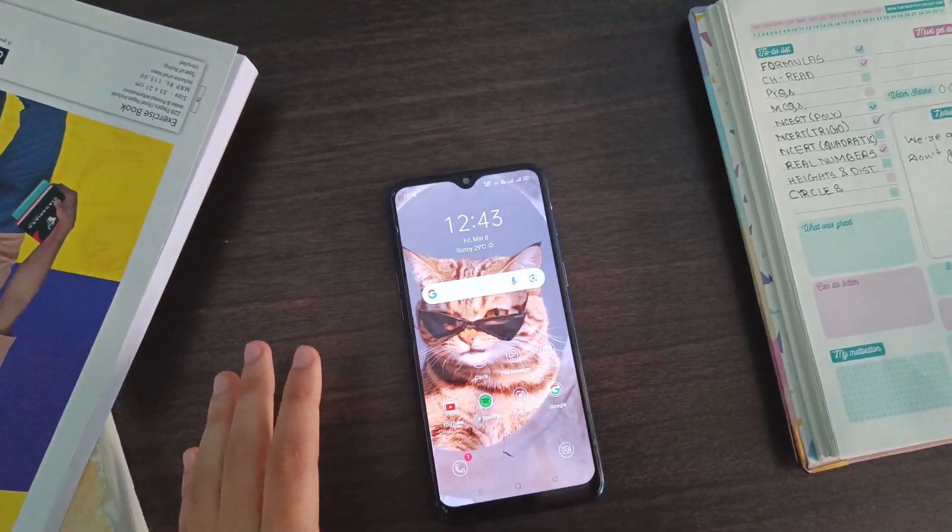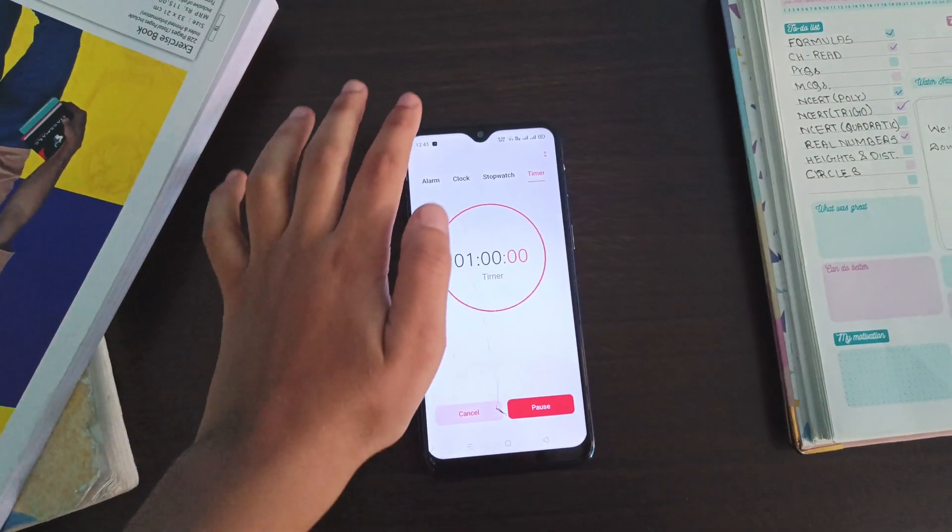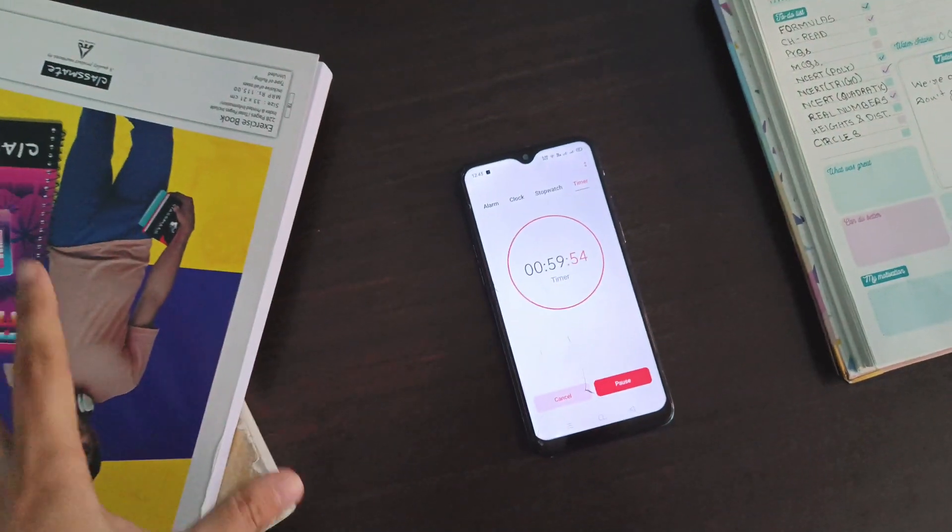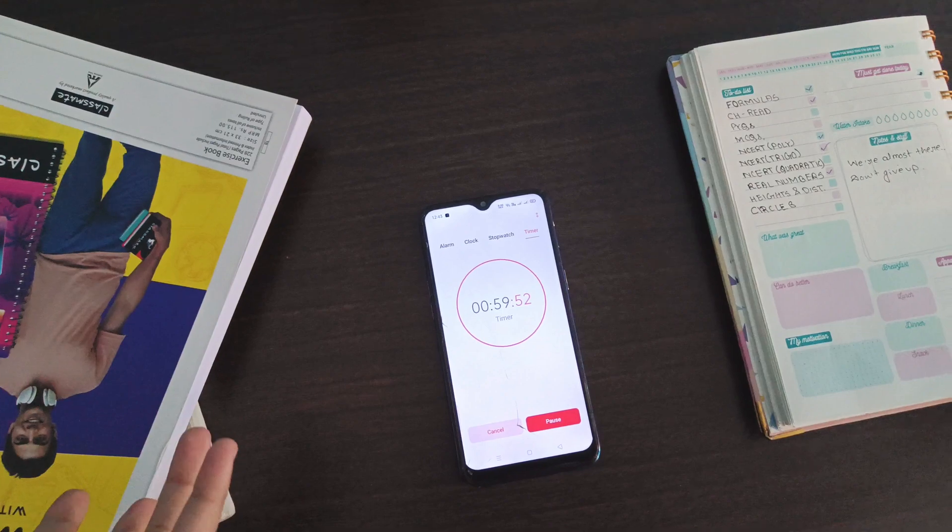It's currently 12:43 right now. I'll place a timer of one hour, so this timer will end at 1:43 PM. So yeah, let's start off with our mathematics study session of quadratic equations.